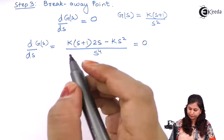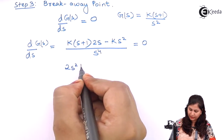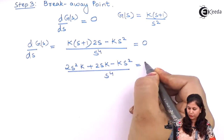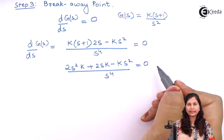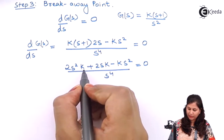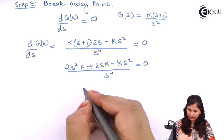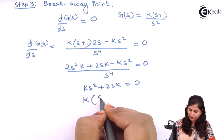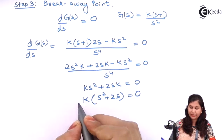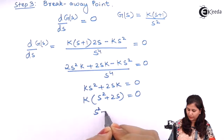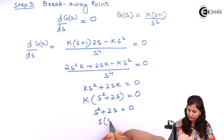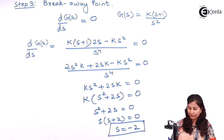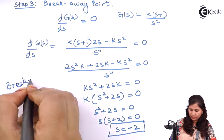Differentiating G(s) and setting it to zero, we get: (2s²k + 2sk − ks²) / s⁴ = 0. Simplifying, ks² + 2sk = 0. Taking k common: s² + 2s = 0. Taking s common: s(s + 2) = 0, giving s = 0 or s = −2. So our breakaway point is s = −2.